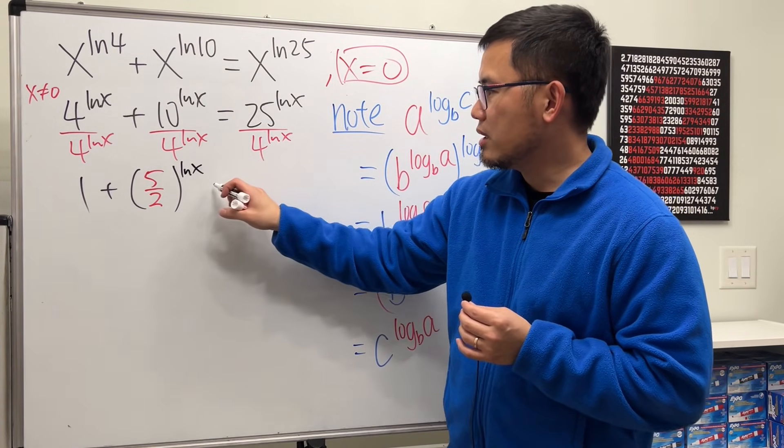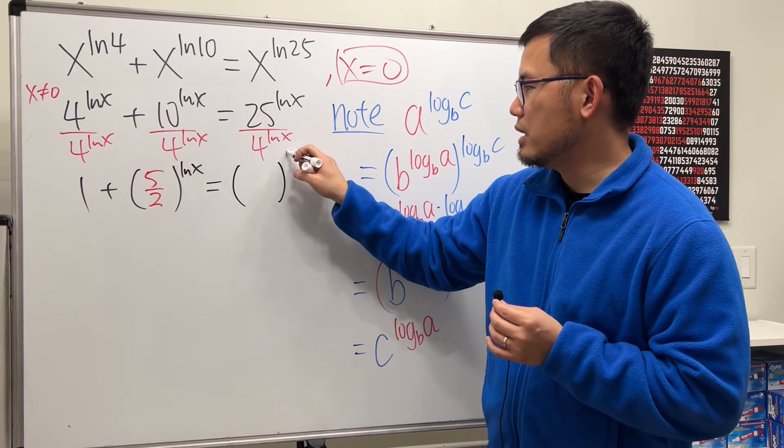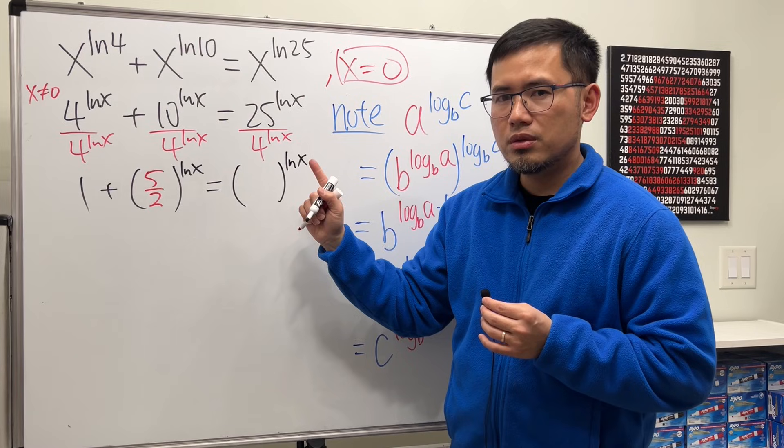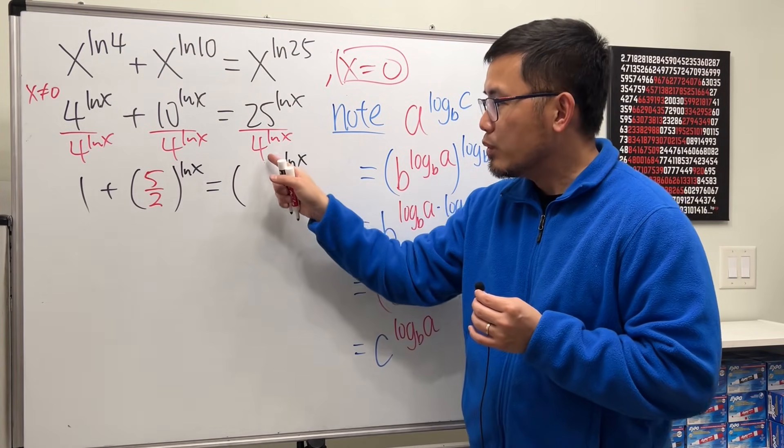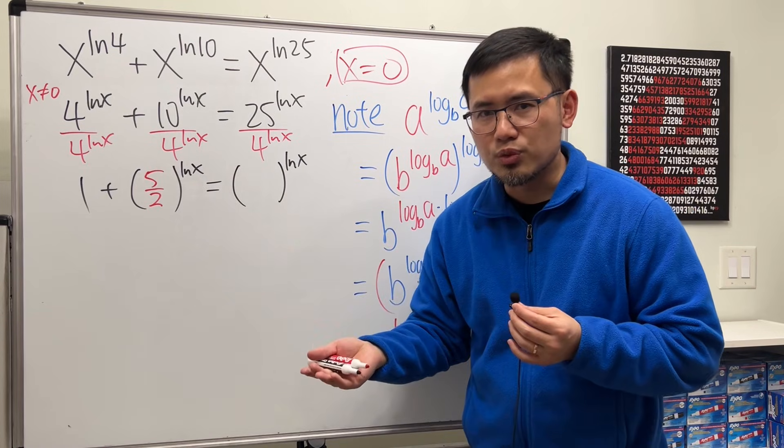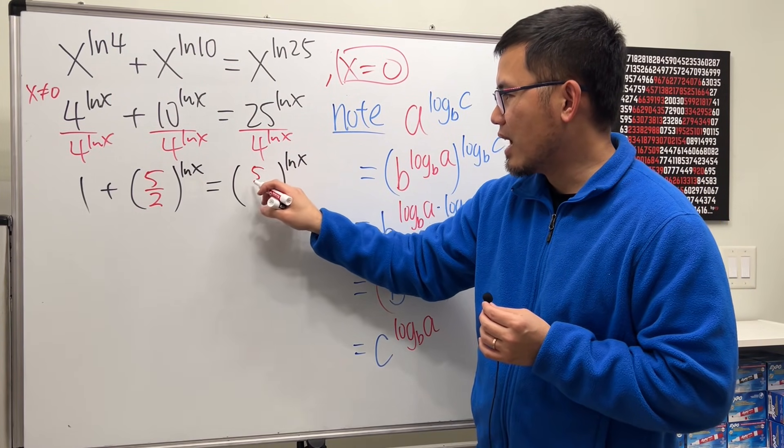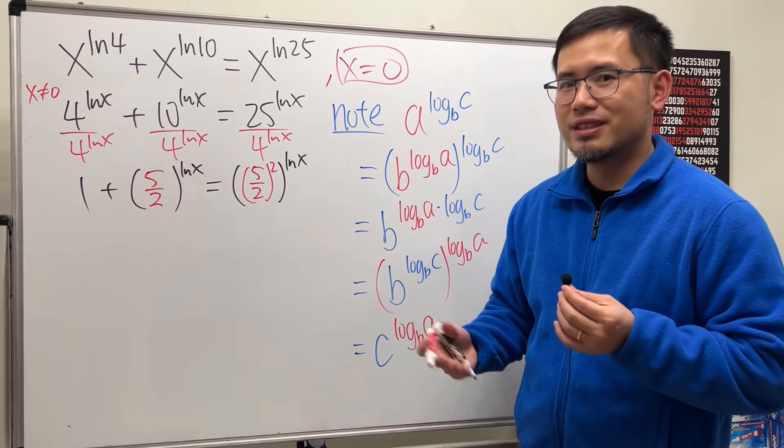And then right here, do the same thing. So we have this raised to the Lnx power. Cannot reduce, though, but 25 is the same as 5 squared. Likewise, 4 is something squared as well. We can write this 25 over 4 as 5 over 2 squared. Can we do that? Certainly, right?